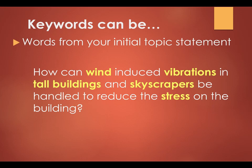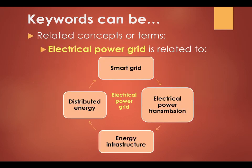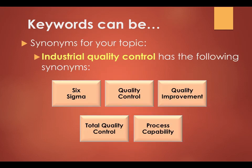Keywords can be words from your initial topic statement or thesis sentence, related concepts or terms, and synonyms for your topic. Sometimes researchers can refer to the same topic in several different ways, and each of these ways can be useful for searching for articles or topics.